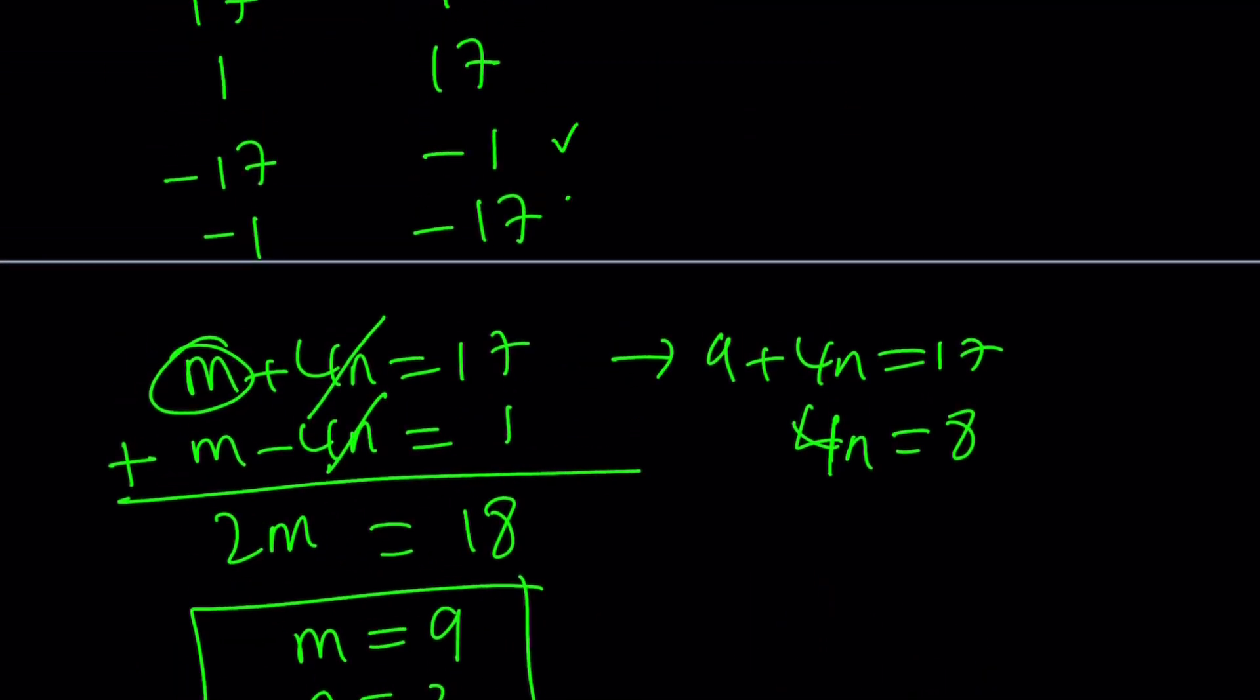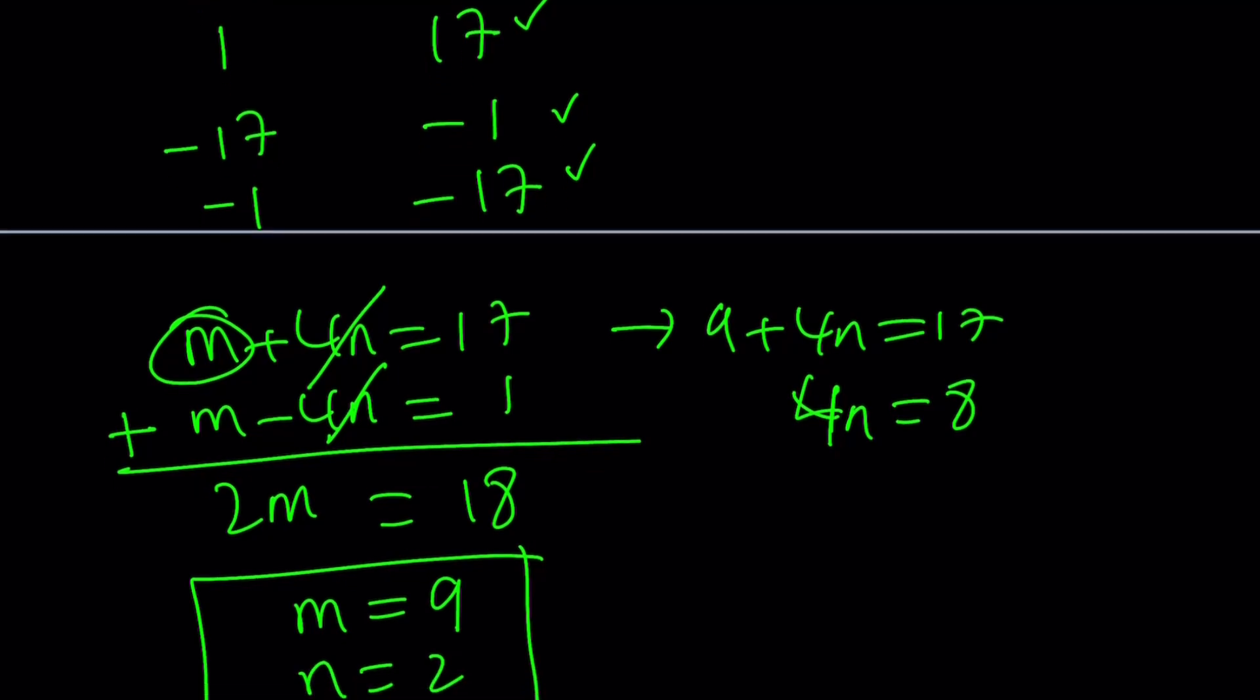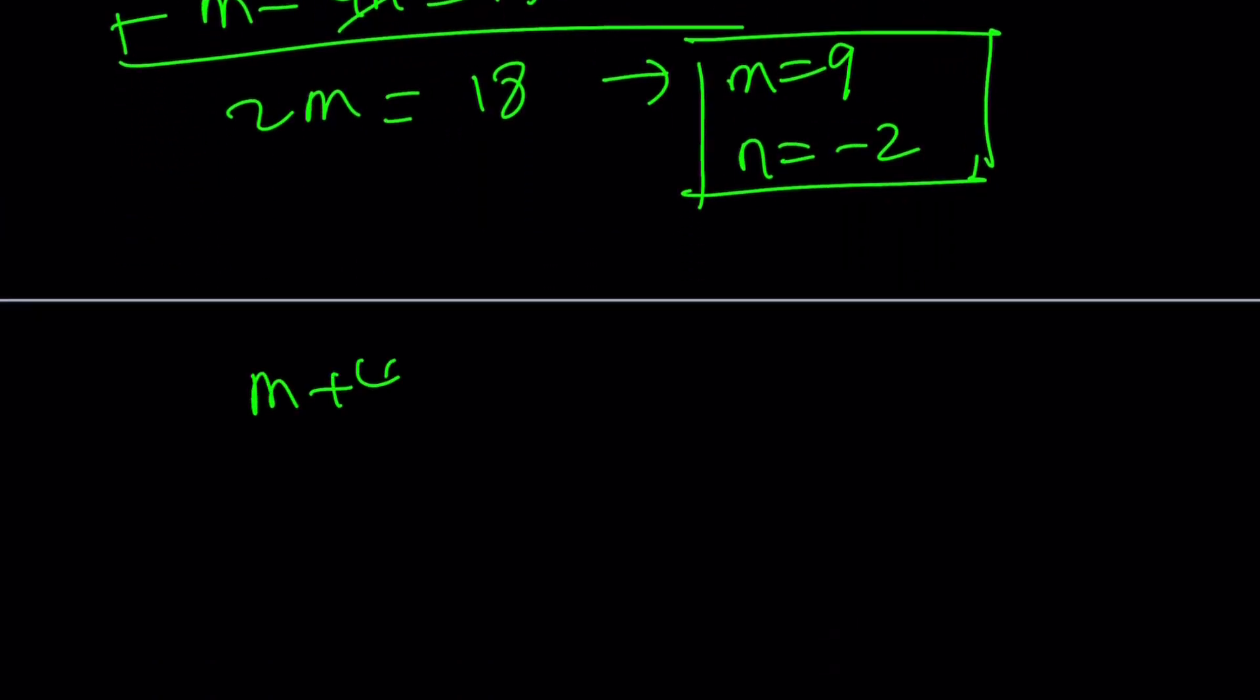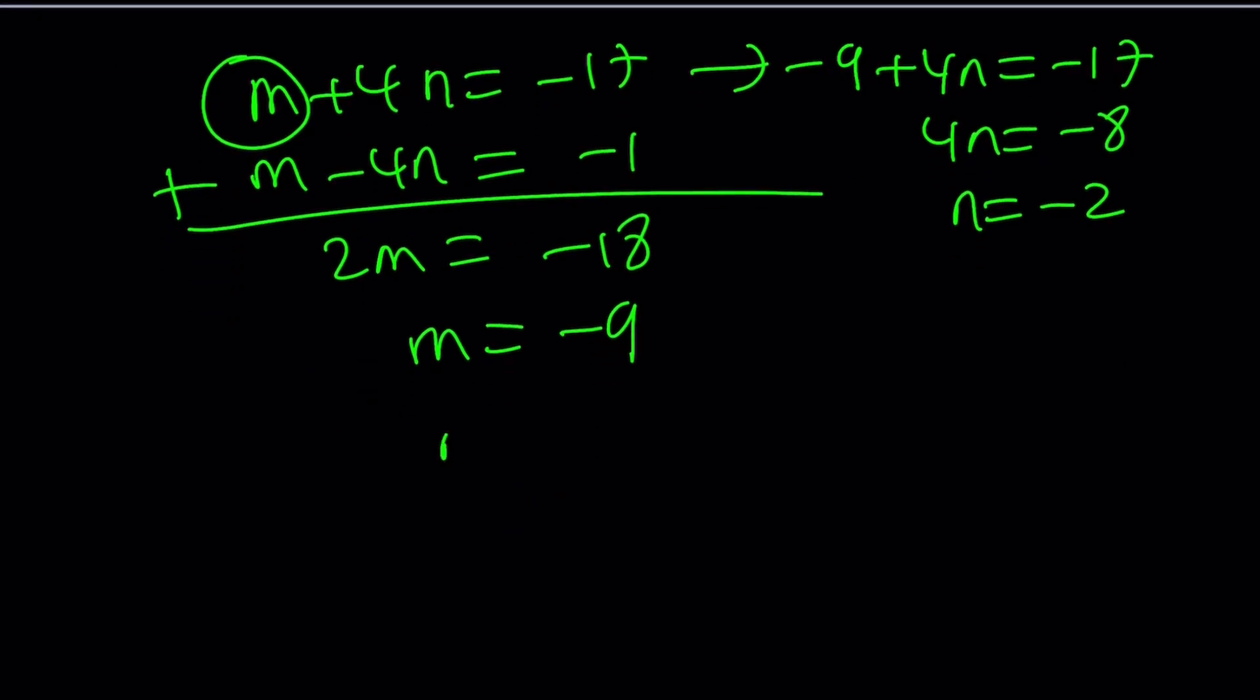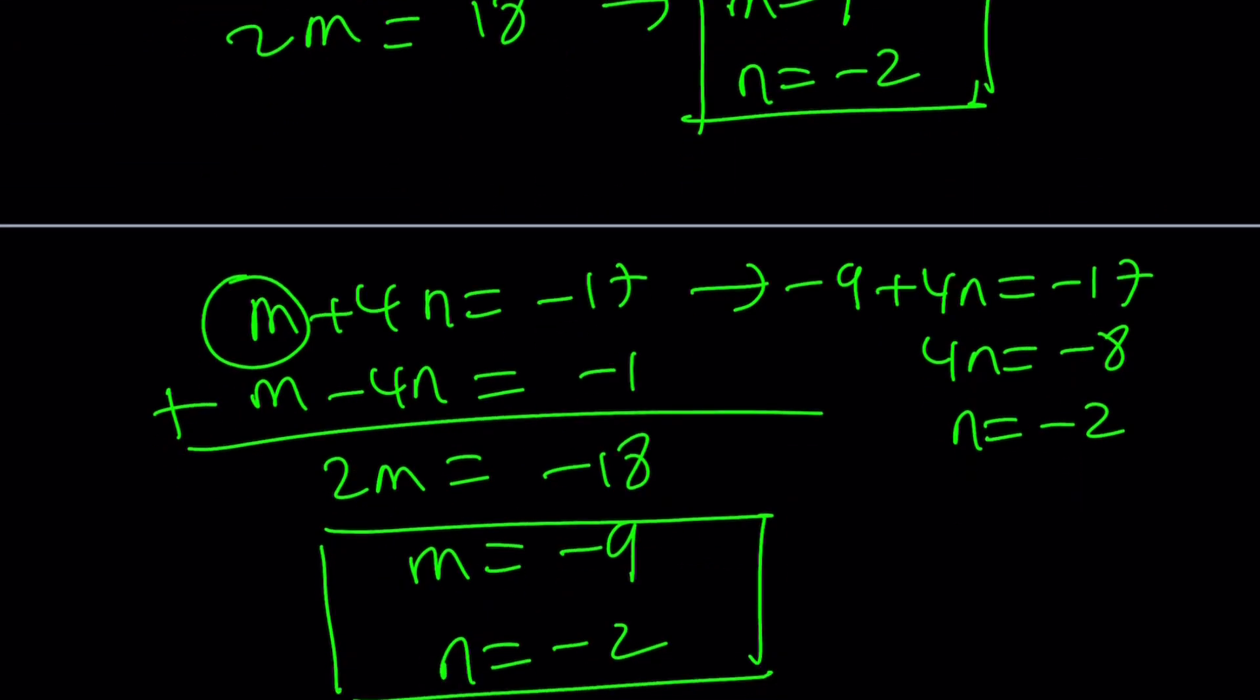And then we're going to be looking at the third and fourth cases where the numbers are negative. So if we start off with the first one, m plus 4n is negative 17, and m minus 4n is negative 1. Again, by adding these up, we get 2m equals negative 18, and m equals negative 9. And let's see what happens if we replace m with negative 9 in the first or second equation. It doesn't matter, but I like the first one better. Negative 9 plus 4n is negative 17. When you add positive 9 to both sides, you get 4n equals negative 8, which implies n equals negative 2. So we're kind of stuck with 2 here, plus minus 2, when m is plus minus 9 so far.